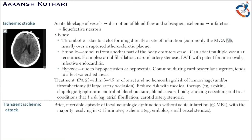Treatment for ischemic stroke: tPA is given if within three to four-and-a-half hours of onset and no hemorrhage is present, since tPA carries a risk of hemorrhage. Alternatively, thrombectomy can be performed if thrombi are present. Aspirin or clopidogrel reduces risk, and optimum control of blood pressure, blood sugar, and lipids is required to prevent thrombosis or emboli formation.